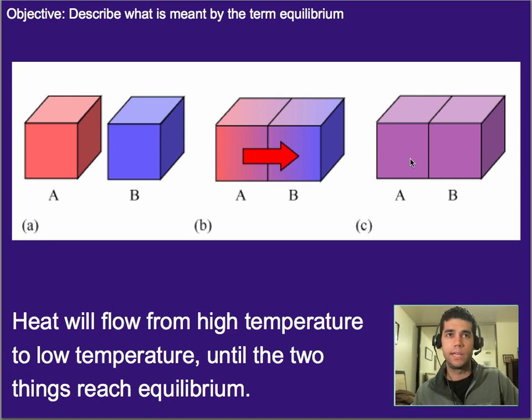So in this case, we have two things that start off at very different temperatures, and the natural way for things to happen is that they will eventually reach the same temperature, and that is thermal equilibrium.